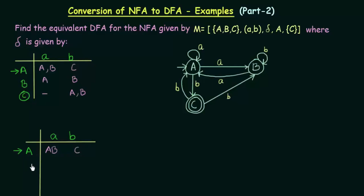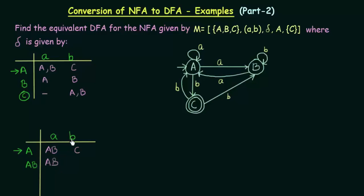Next, we need to check the reachable states. Let's discuss state AB. To find where AB goes on input A and B, we look at both states A and B in the NFA table and perform the union. AB on getting input A: the union of A's result (A, B) and B's result (A) gives AB. AB on getting input B: the union of B's result (B) and A's result (C) gives BC. So AB goes to AB on input a and to BC on input b.